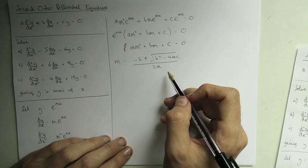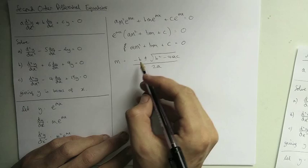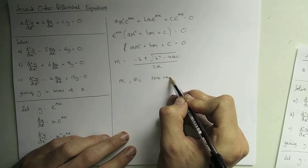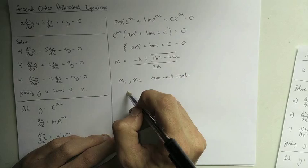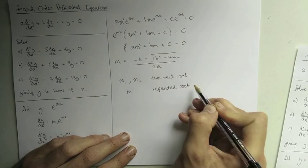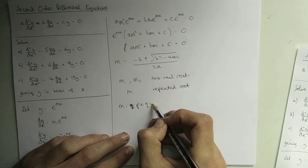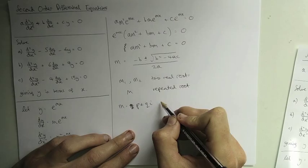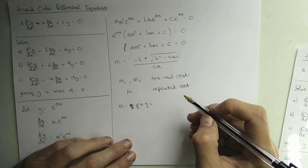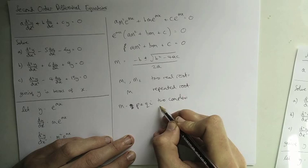Once we know a, b, and c, we find the values of m and we'll be in one of three cases. If the discriminant b² − 4ac is positive, we have two different real roots. If it's zero, we have one repeated root. If it's negative, we get two complex conjugate roots: m = p ± qi, where p and q are the real and imaginary parts. I'm using p and q rather than a or b to avoid confusion with the constants above.